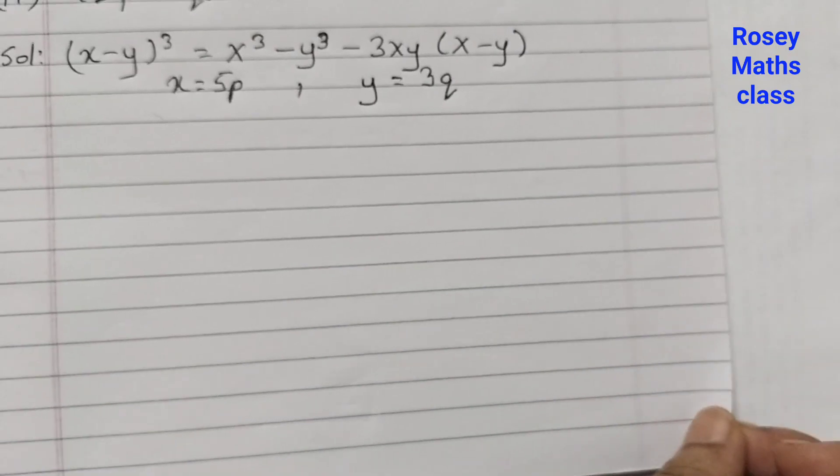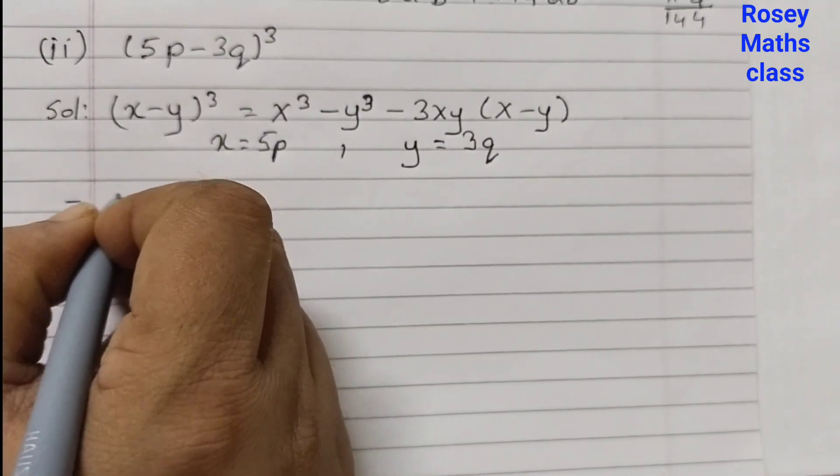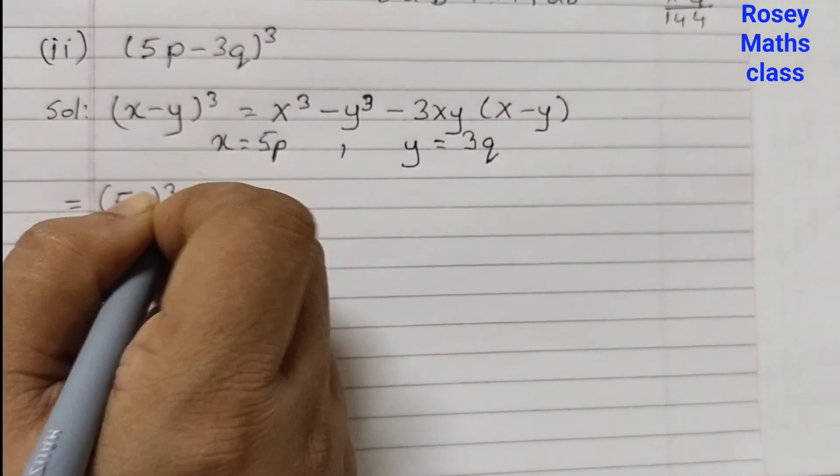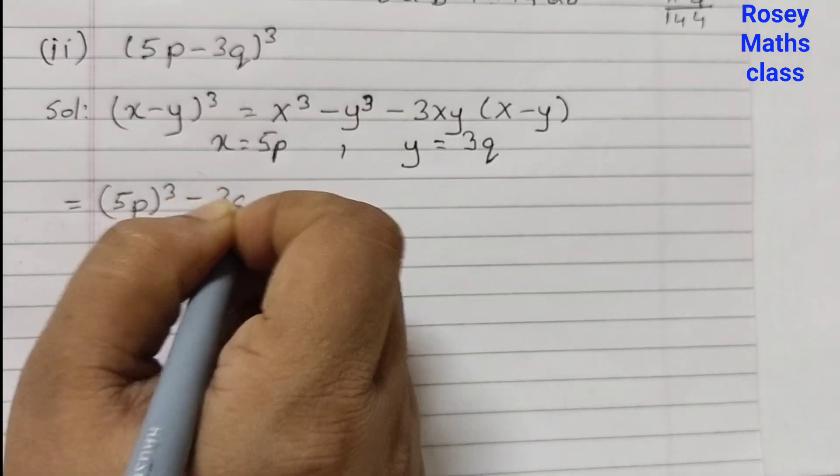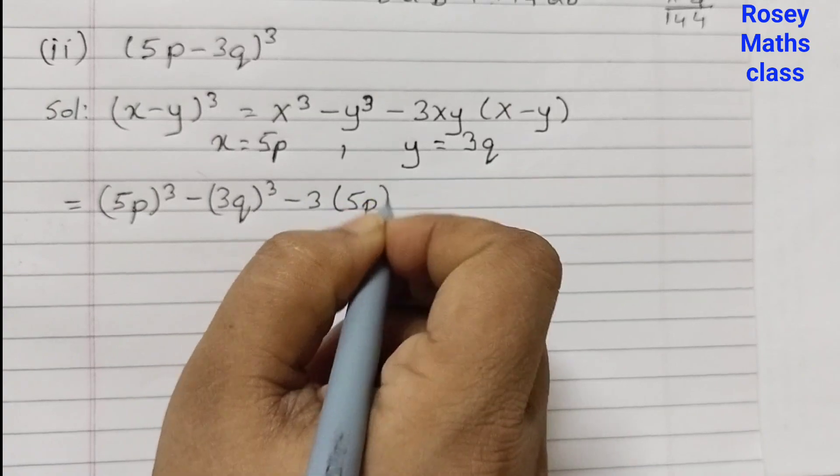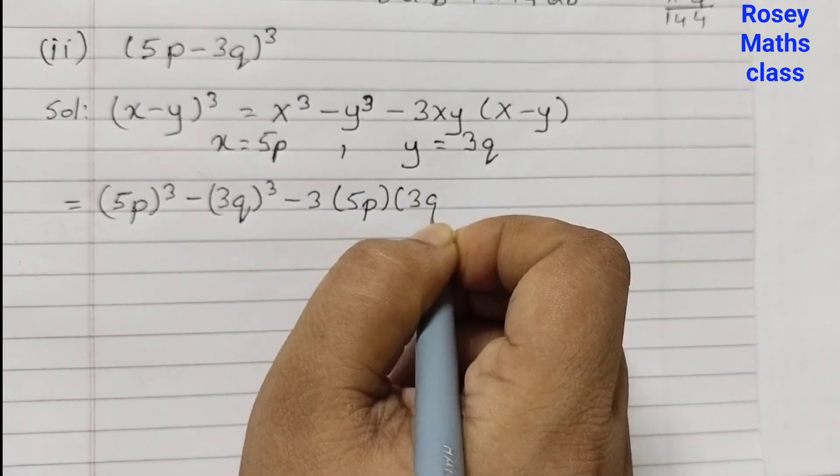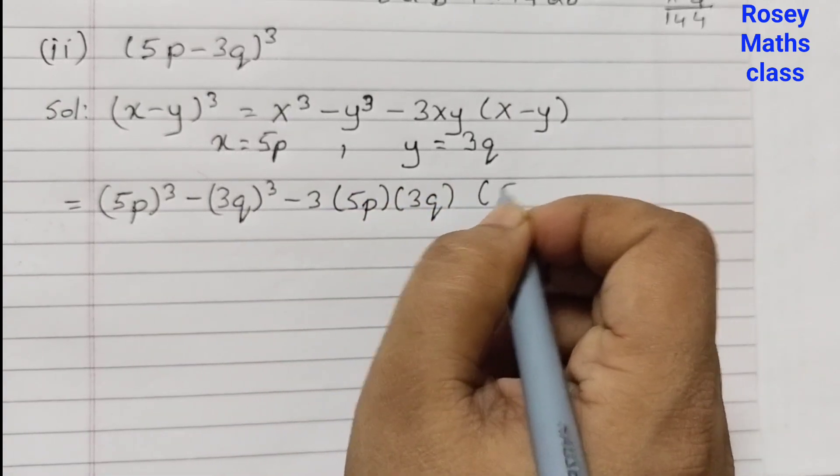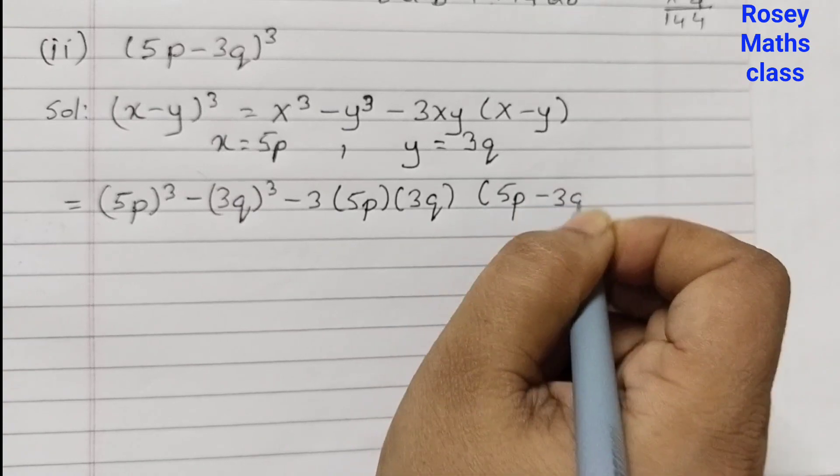Same way we will do: equals to (5p)³ - (3q)³ - 3(5p)(3q)(5p - 3q).